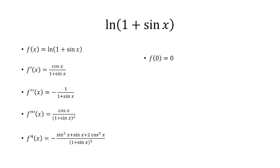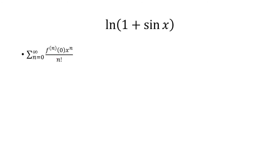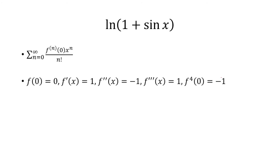Plugging in 0: f(0) = 0. For f'(0), anywhere you see sine it becomes 0 and cosine becomes 1, so the first derivative is 1. The second derivative at 0 is negative 1, the third is 1, and the fourth is negative 1 — it's alternating. Recalling the Maclaurin series formula and using these as coefficients, since f(0) = 0 we start at n = 1. The series is x minus x squared over 2 plus x cubed over 6 minus x to the fourth over 12.